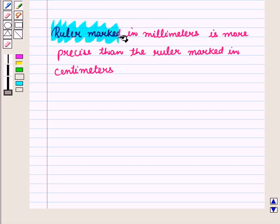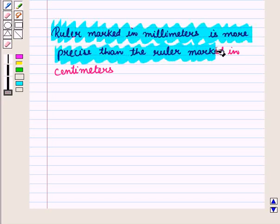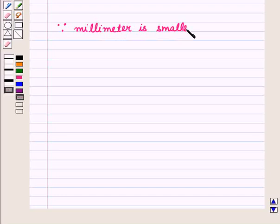In a similar way, a ruler marked in millimeters is more precise than the ruler marked in centimeters, because millimeter is a smaller unit than centimeter.